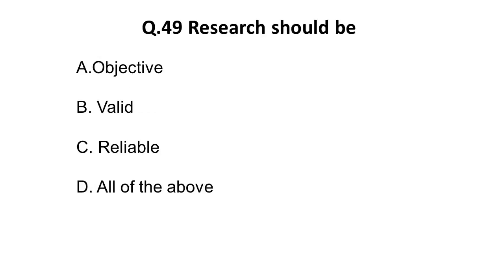The next question: research should be — option A is objective, option B is valid, option C is reliable. All three should be present in research. The correct answer is all of the above.